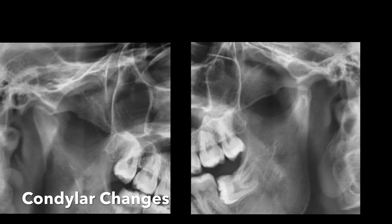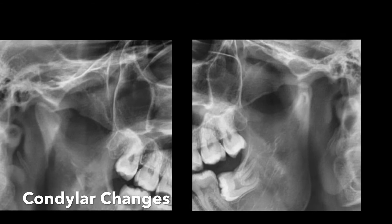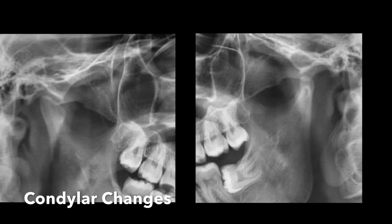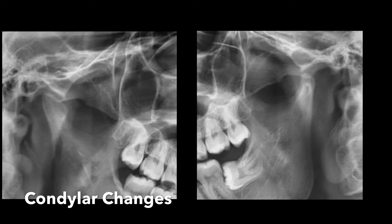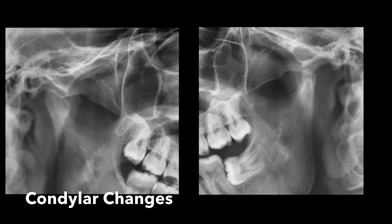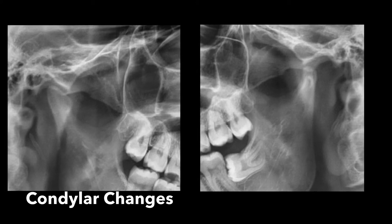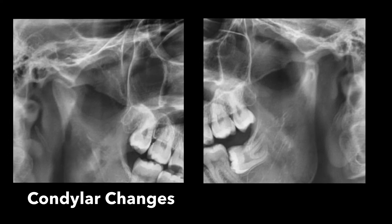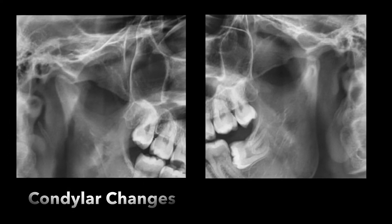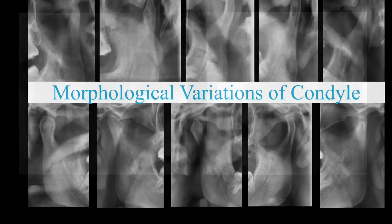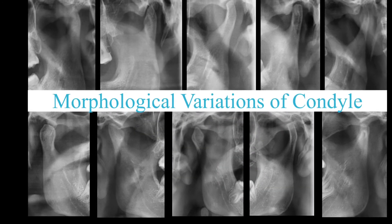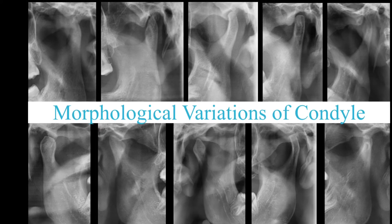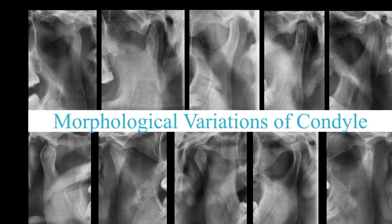These are a few interesting condylar changes. In the first picture, you can see a shape called the toadstool appearance — this is a condition called geminal arthrosis. The second image is a case of hypoplastic condyle, or condylar hypoplasia, as a result of trauma at a younger age. These represent various abnormal shapes of the condyle as well as a few morphological variations in condylar shape.